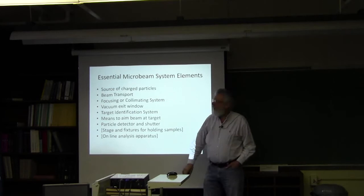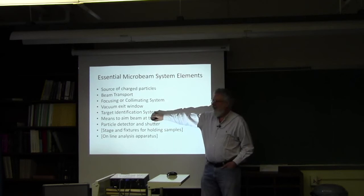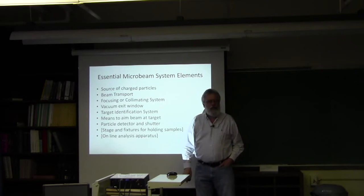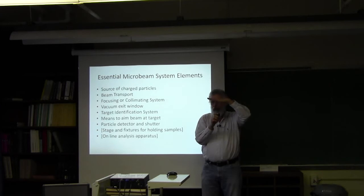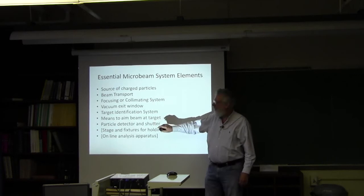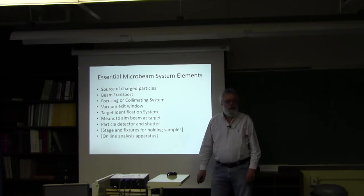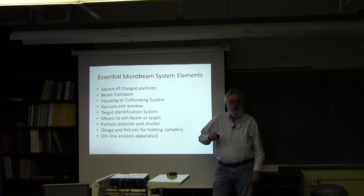You need a vacuum exit window. You need some way of identifying the targets that you want to shoot at. So you have to have microscope and video system and computer control with that. Means to aim the beam at the target. That means either here's the beam and you move the target this way, or the target is here and you move the beam. But you need some means of getting aimed at the target, so that's an interesting component. It's usually speed and accuracy are what you're looking at here. You need some way to detect the fact that a particle has come through. Usually counted, and you need a way to turn it off when enough of them have gone by.